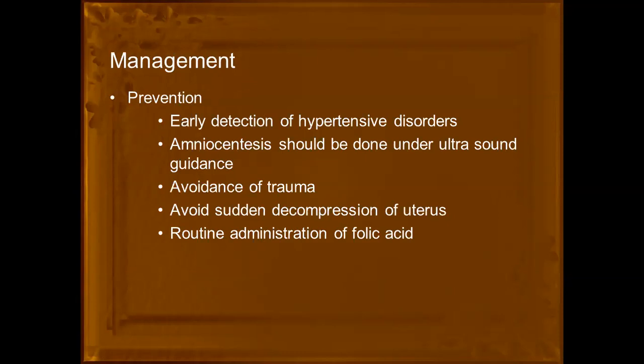Regarding management, prevention includes: early detection of hypertensive disorders, amniocentesis done under ultrasound guidance, avoidance of trauma and sudden decompression of the uterus, and routine administration of folic acid started at least one month prior to pregnancy. These measures target the key risk factors of hypertensive disorders, uterine decompression, and folic acid deficiency that contribute to abruptio placenta.